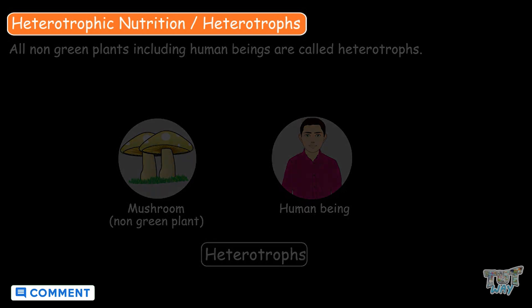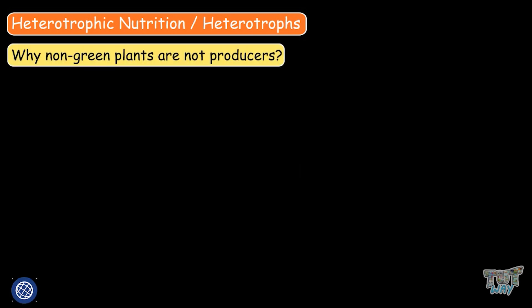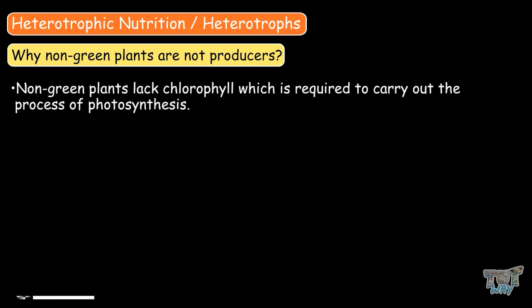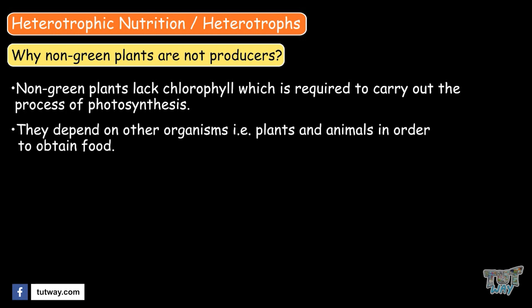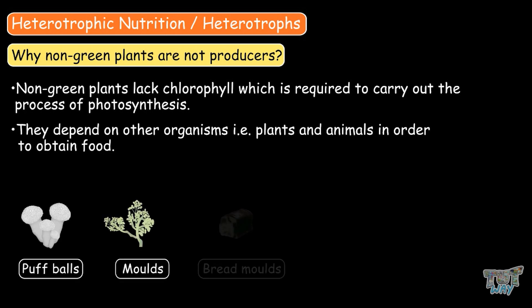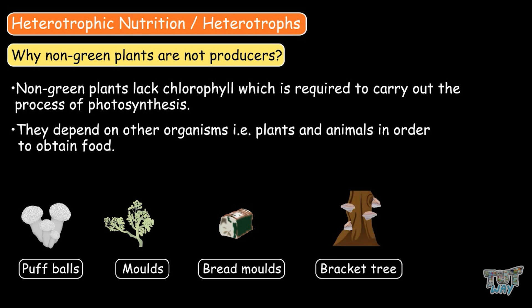The non-green plants lack chlorophyll, which is required to carry out the process of photosynthesis. Therefore, they depend on other organisms — plants and animals — in order to obtain food. For example, puffball, molds, bread molds, bracket fungi, and yeast. They also have heterotrophic mode of nutrition.